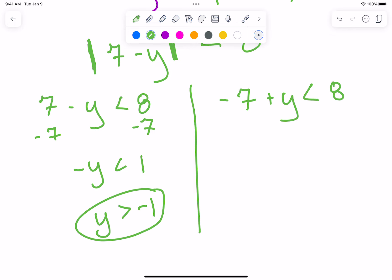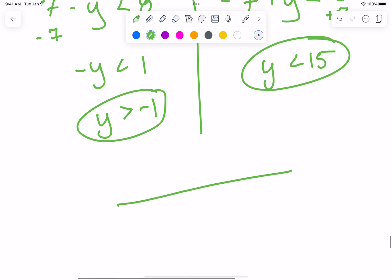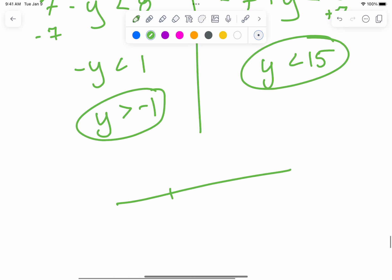Alright, now add the 7, so y is less than 15. What do they want? Everything. Negative 1 is over here and greater than, so that way. 15 is here, less than, that way.